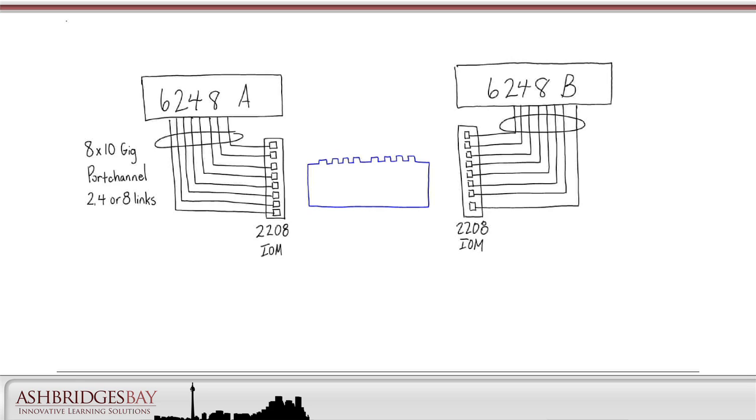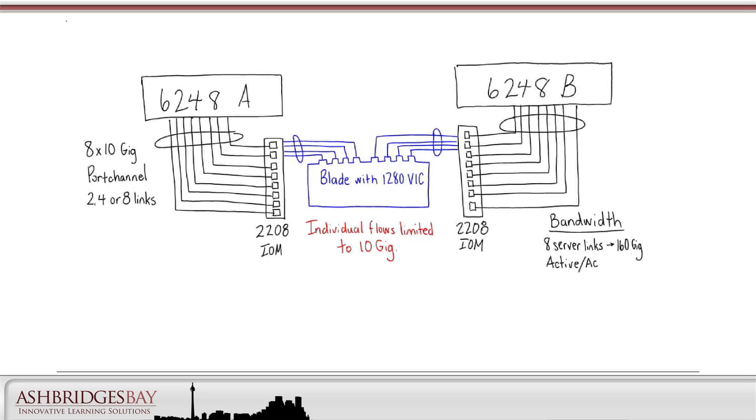Using the new 1280 mezzanine card, we can connect our half-width blade to each side with four 10GB connections to the midplane. These connections are automatically port channeled. That gives 40GB on each side, although individual flows are limited to 10GB. With eight half-width blades, we have a total of 640GB active-active and a 4 to 1 oversubscription.